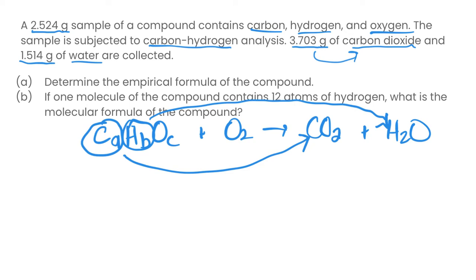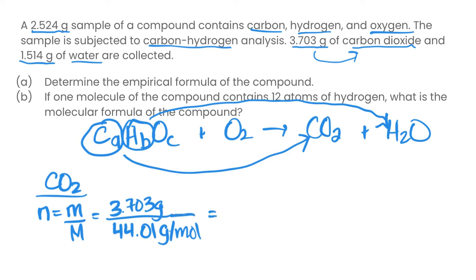Let's start with the carbon dioxide numbers. Whenever we want to do empirical formulas, we always need to convert back to moles. To find the moles of carbon dioxide we had, we're going to take mass and divide it by molar mass. We have 3.703 grams of CO2 and the molar mass of CO2 is 44.01 grams per mole. That would give you 0.08413, I'm going to keep four decimal places. That's the moles of CO2 that is produced.